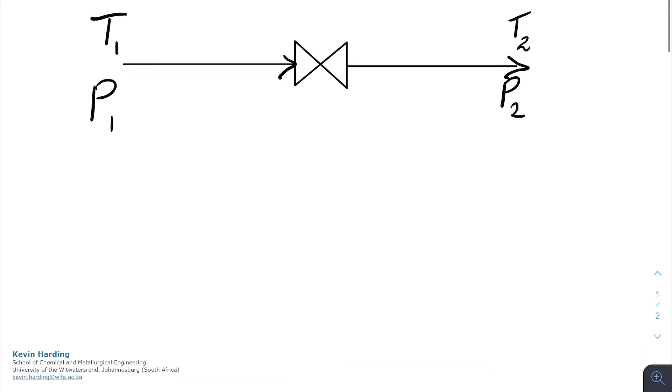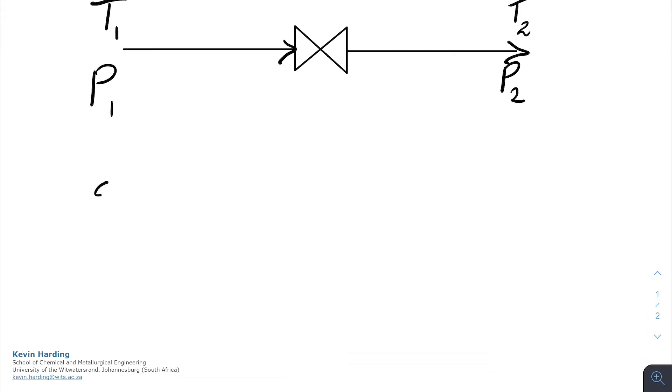We're going to start with the energy balance: dU/dt equals the sum of H's plus Q plus W. Like we've said before, we're not going to worry about the potential energy or the kinetic energy if I've not asked you to. In the system we can see it's horizontal, so we're okay to leave it off anyway.